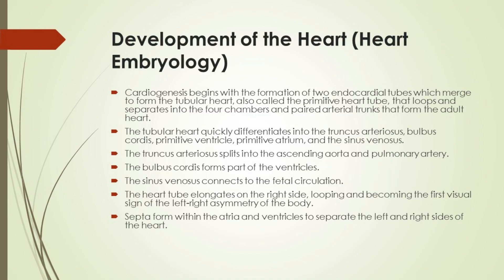Cardiogenesis begins with the formation of two endocardial tubes which merge to form the tubular heart, also called the primitive heart tube, that loops and separates into the four chambers and paired arterial trunks that form the adult heart. The tubular heart quickly differentiates into the truncus arteriosus, bulbus cordis, primitive ventricle, primitive atrium, and the sinus venosus.